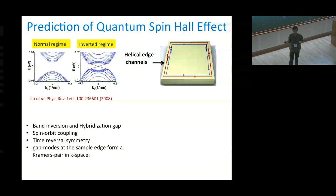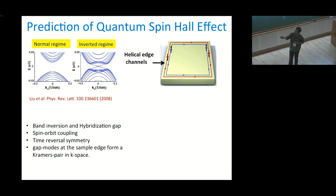This is called the quantum spin Hall effect. As you have heard from the previous talk, the first material where it has been observed is mercury telluride. But here the interesting thing is that you are engineering the band structure — you can tune it by changing the thickness of these two materials and go from a normal gap to the quantum spin Hall state.